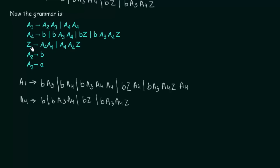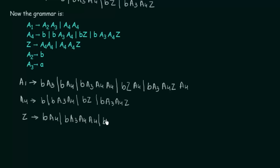Now let's come to Z. Z is giving A4, A4, which starts with a variable — that is not accepted. So we have to replace this first A4 with all the productions of A4. Starting with B: Z gives B, A4; then B, A3, A4, A4; then B, Z, A4; and B, A3, A4, Z, A4. This handles the first part of Z's productions.